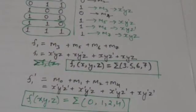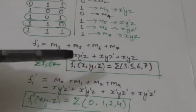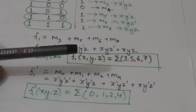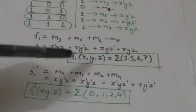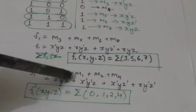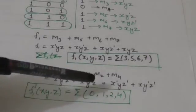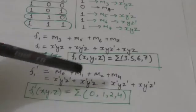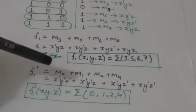When we combine all these minterms — m0, m1, m2, m4 — by the OR operator, that expression equals the complement of function f1. We can also represent the complement in shorthand: f1-complement(x, y, z) = sigma(0, 1, 2, 4), where sigma indicates the sum of minterms, 0, 1, 2, 4 are the subscripts, and x, y, z represents the order of variables in the minterms.